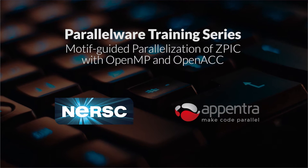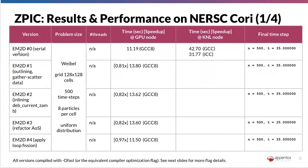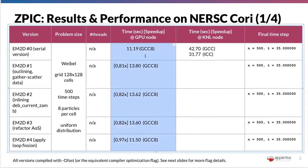In the documentation here, you can see performance measurements using the GCC compiler in this case, for the problem setup that we have selected with minus so fast or equivalent flux enabled.